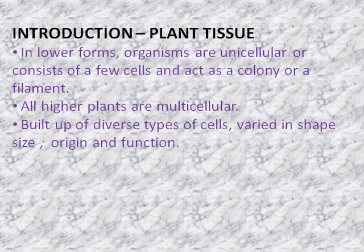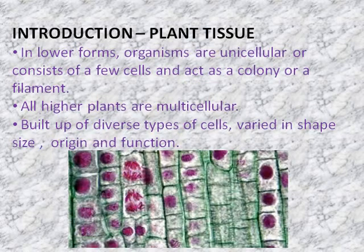That means a number of cells unite to perform a certain function, and these cells can be of different types, shape, size, origin and function. You will see a small structure of a number of cells - multicellular plant tissue. You can see mitosis also. These are a number of cells arranged one above the other.